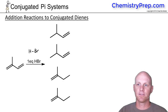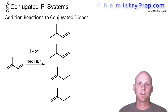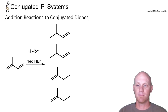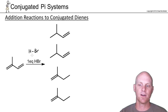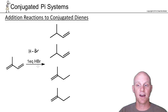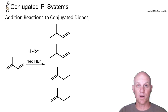Now we're going to take a look at addition reactions to conjugated dienes. We explored a whole host of addition reactions for regular alkenes, and with conjugated systems it's a little more complicated. For example, with HBr addition, it adds Markovnikov — H on the less substituted side, bromine on the more substituted side — going through a carbocation intermediate with chances for rearrangements.